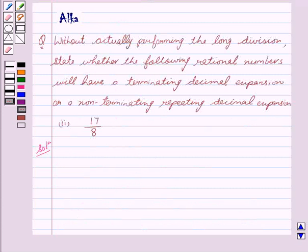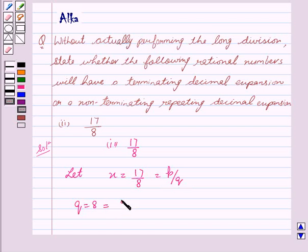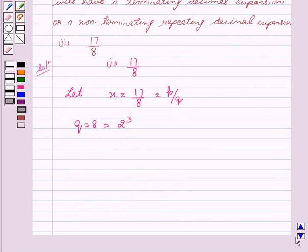Now, let's start with the solution. For 17/8, let x = 17/8. Finding the factors of q = 8, we see it is 2^3.